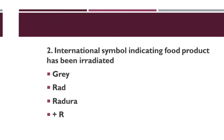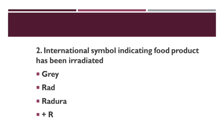Next question: What is the international symbol indicating that food products have been irradiated? Option A: Gray. Option B: Rad. Option C: Radura. Option D: Plus R. Correct answer is Option C — Radura. That is the international symbol for the irradiation process.